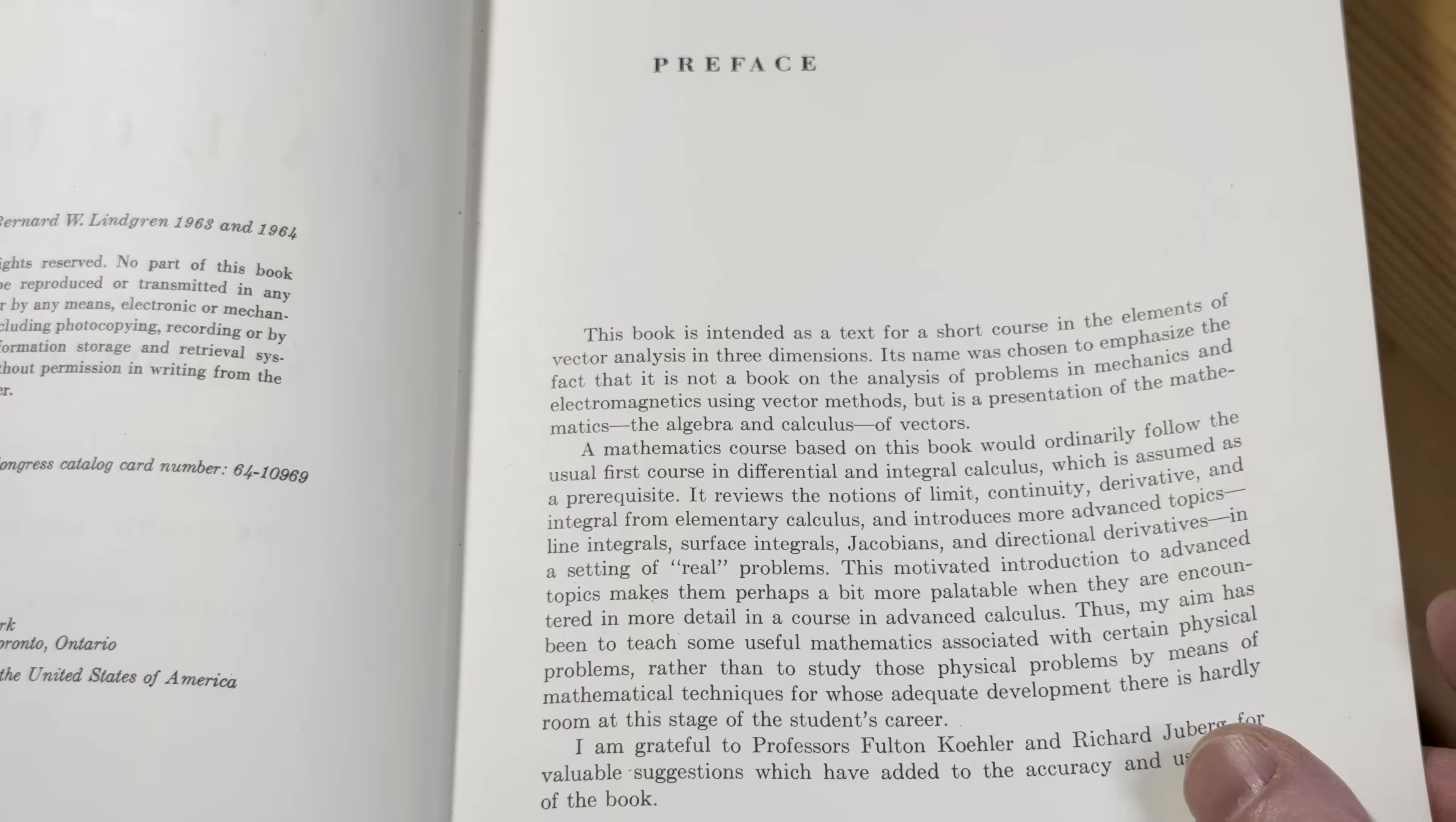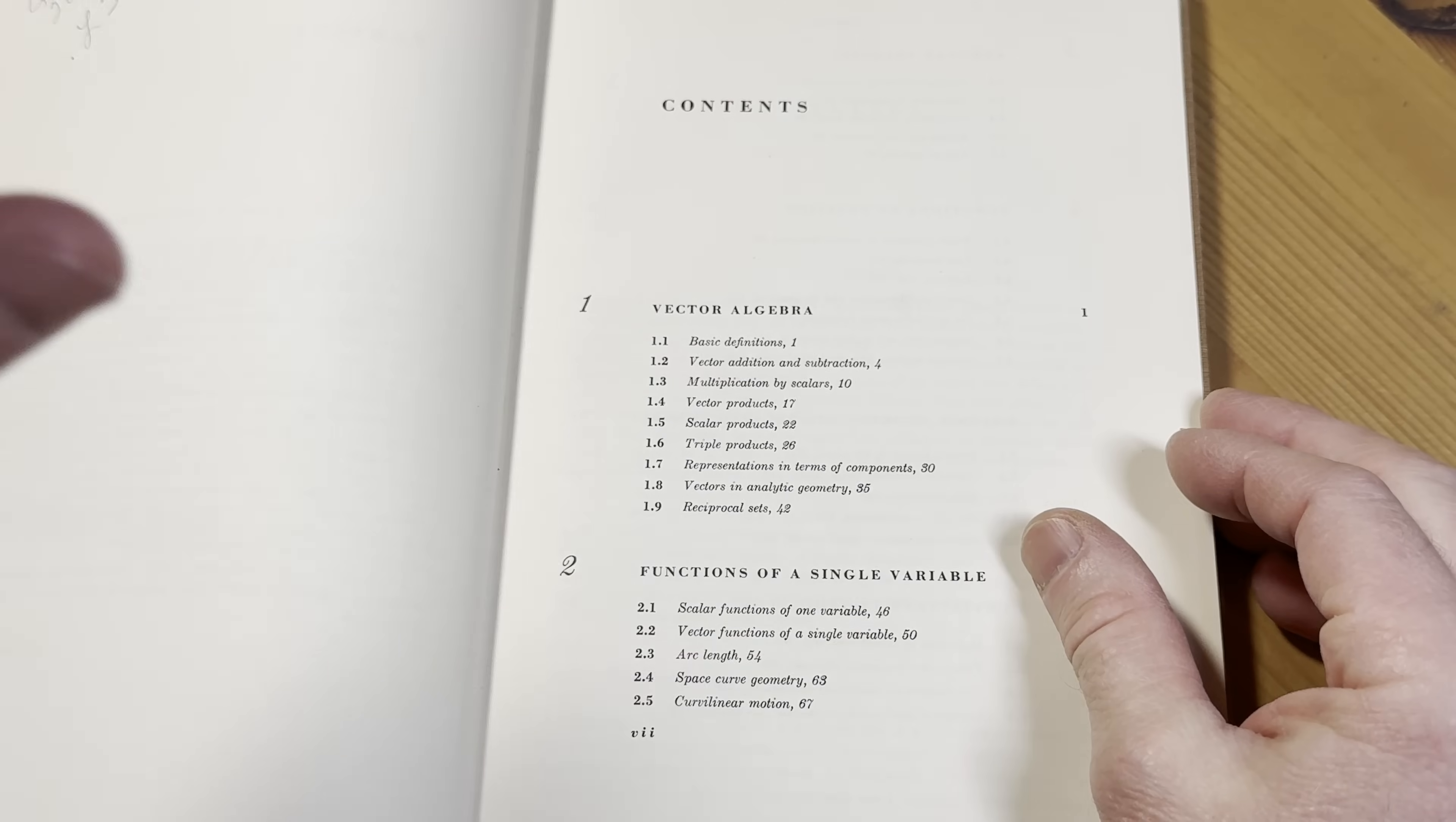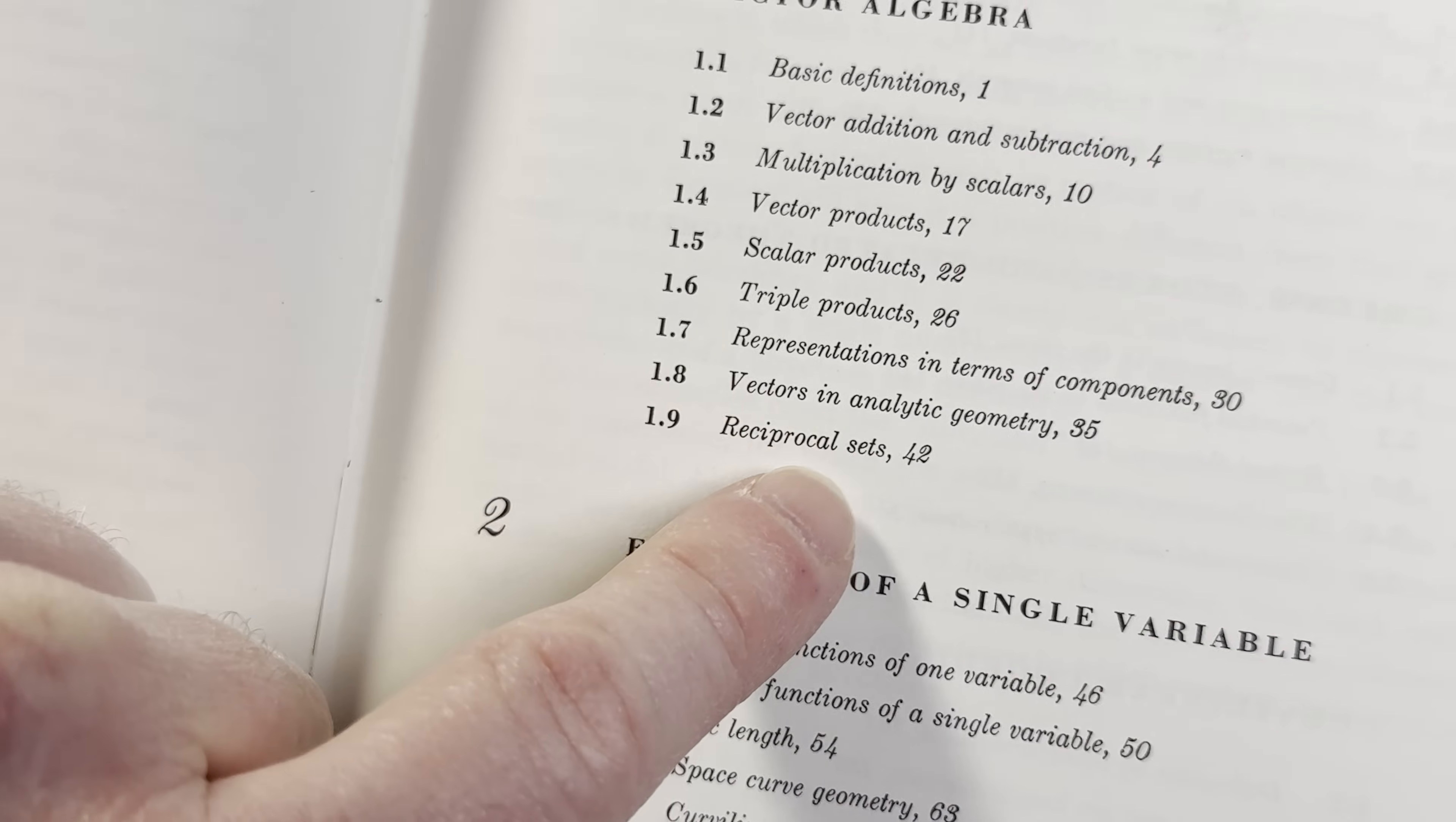Let's take a look at the contents. If you're in a Calc 3 course now, this book is worth getting. However, there are things in your Calc 3 course that you will not find in this book. Just because topics change, there's also things in this book that you won't find in your Calc 3 course. So it starts with vector algebra, which is really basic stuff like dot product, cross product. There are some things here like reciprocal sets that you don't learn in Calc 3.